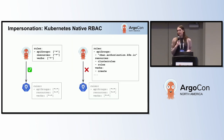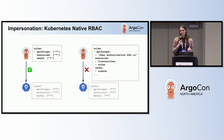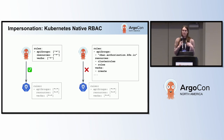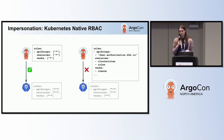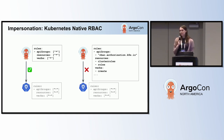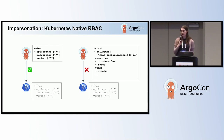There's also a secondary benefit of using impersonation, which is getting some of the benefits of Kubernetes native RBAC. In Kubernetes, when you have the permissions to create a role, you might think that lets you escalate your permissions — you can create a role with higher permissions than you yourself have. But Kubernetes by default does not let you do that.